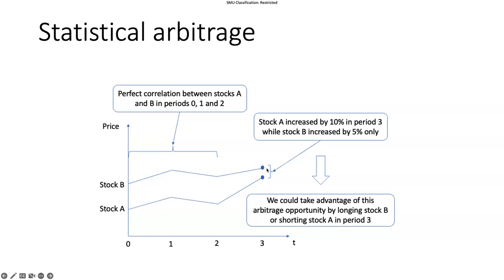This is our observation. We could take advantage of this arbitrage opportunity by going long in stock B, because if stock A increased by 10%, then stock B is also expected to increase by 10% — but now it's undervalued, so in the long run it will go back to its fair value, meaning it has higher potential to go up in price. Alternatively, stock A may be overpriced, so we can go short in stock A at this period.